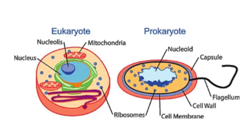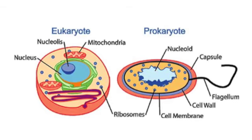Eukaryotic cells have a nucleus, while prokaryotic cells have their DNA floating in the cytoplasm. This DNA technology can be used in both prokaryotic and eukaryotic organisms. The end results are similar, but they require different steps to achieve them.